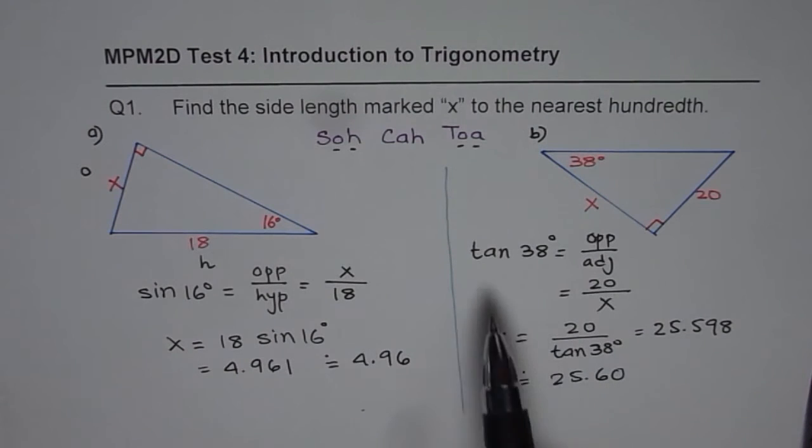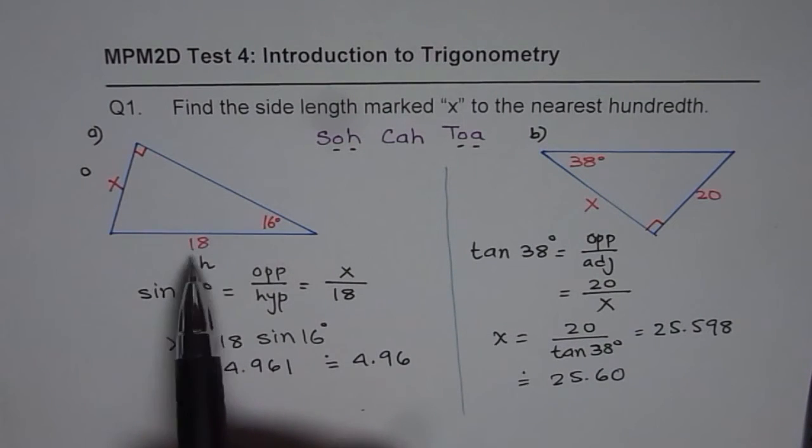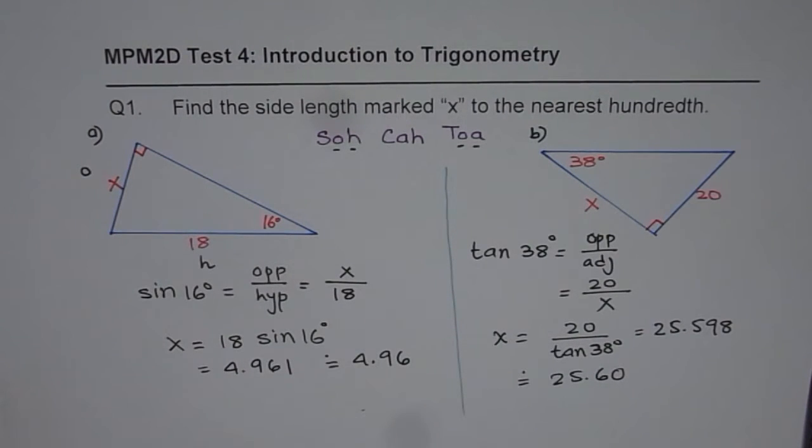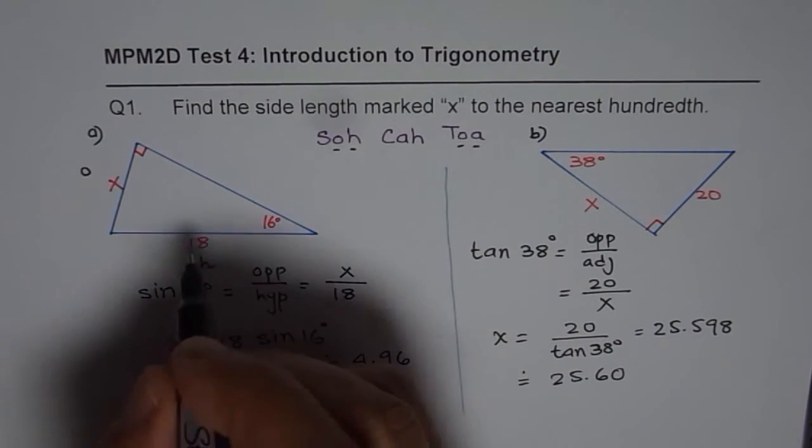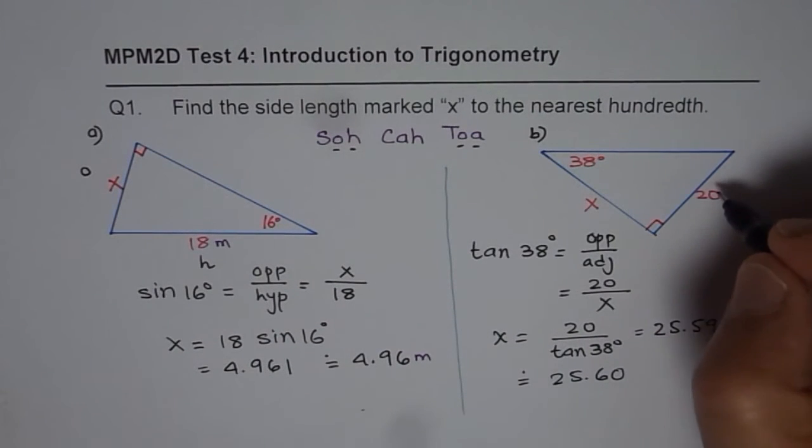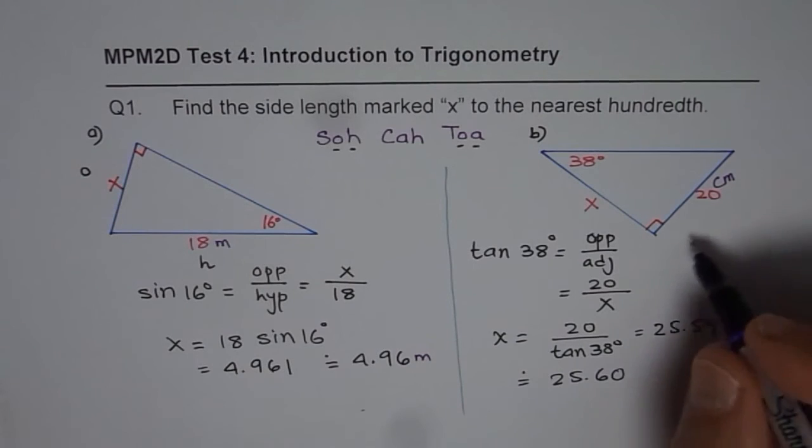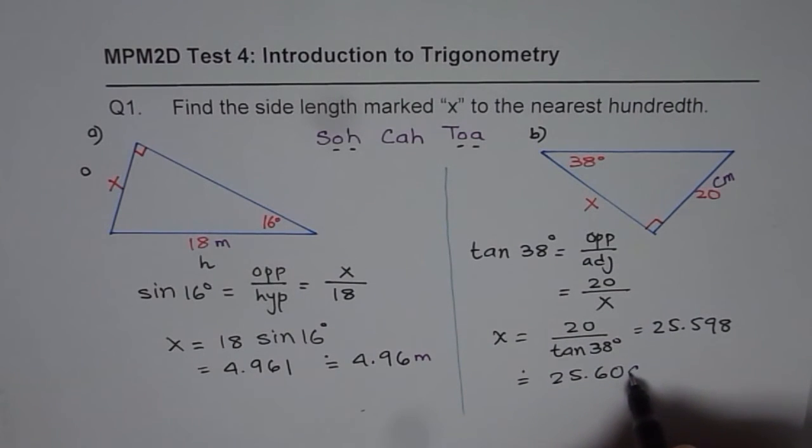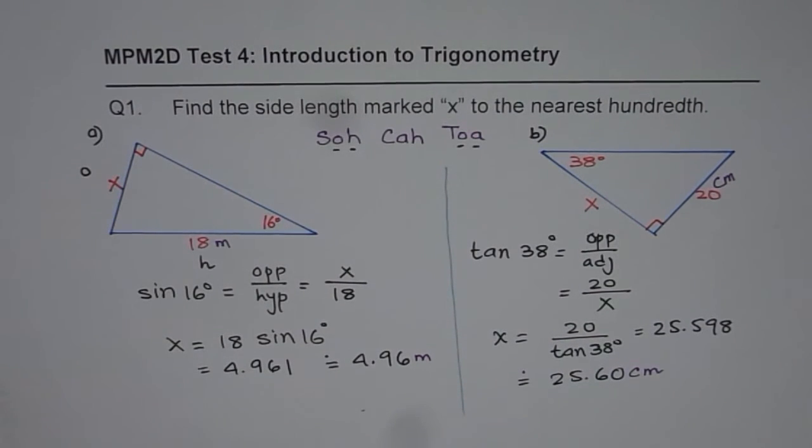Now in this question the units are not there for the side lengths. At times if there are units, so let us say if there are units meters here, then you should include units in your answer. Let me just add units here. Let's write centimeter for this. So 20 centimeters, in that case you have to write that X is this many centimeters. So that is kind of a precaution you should take.